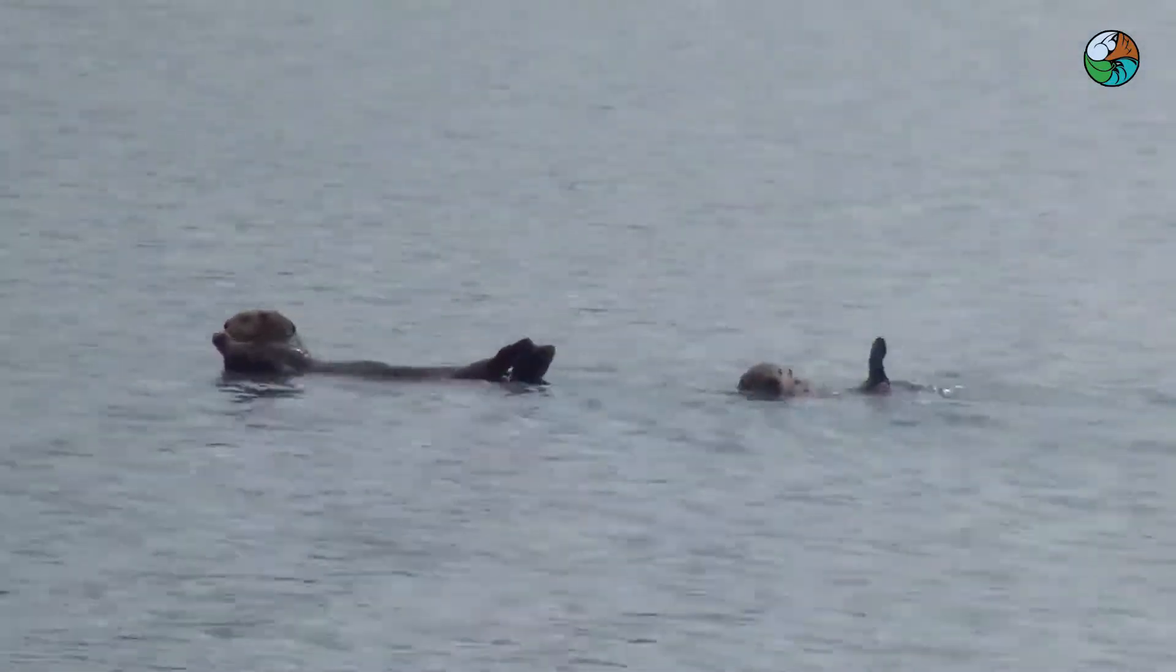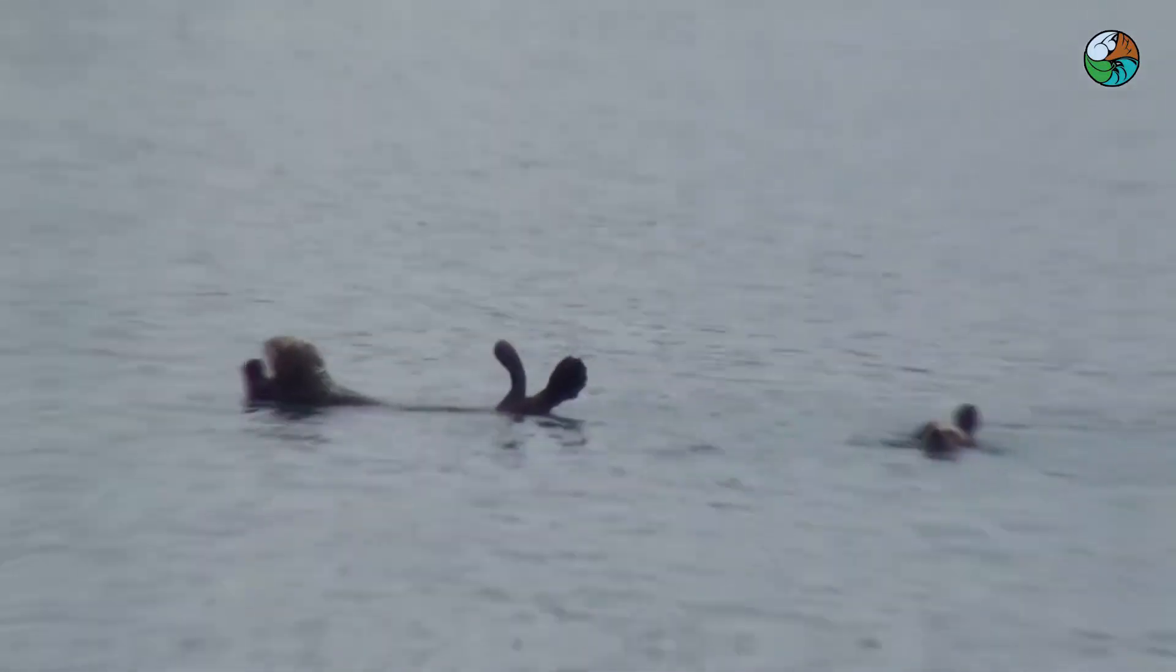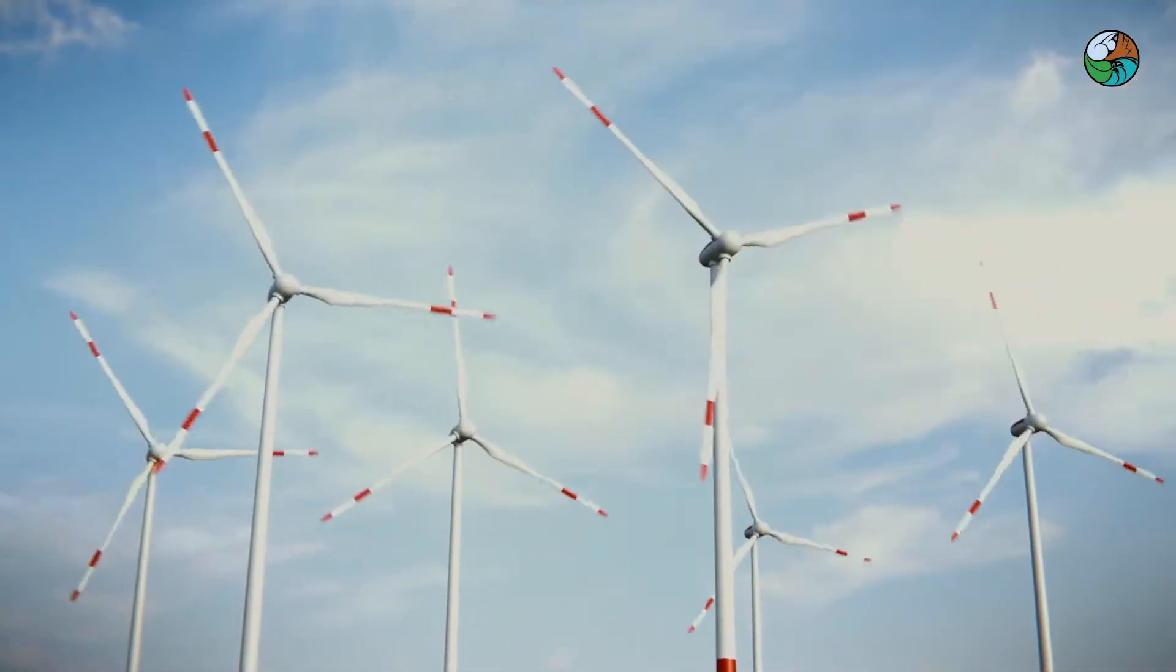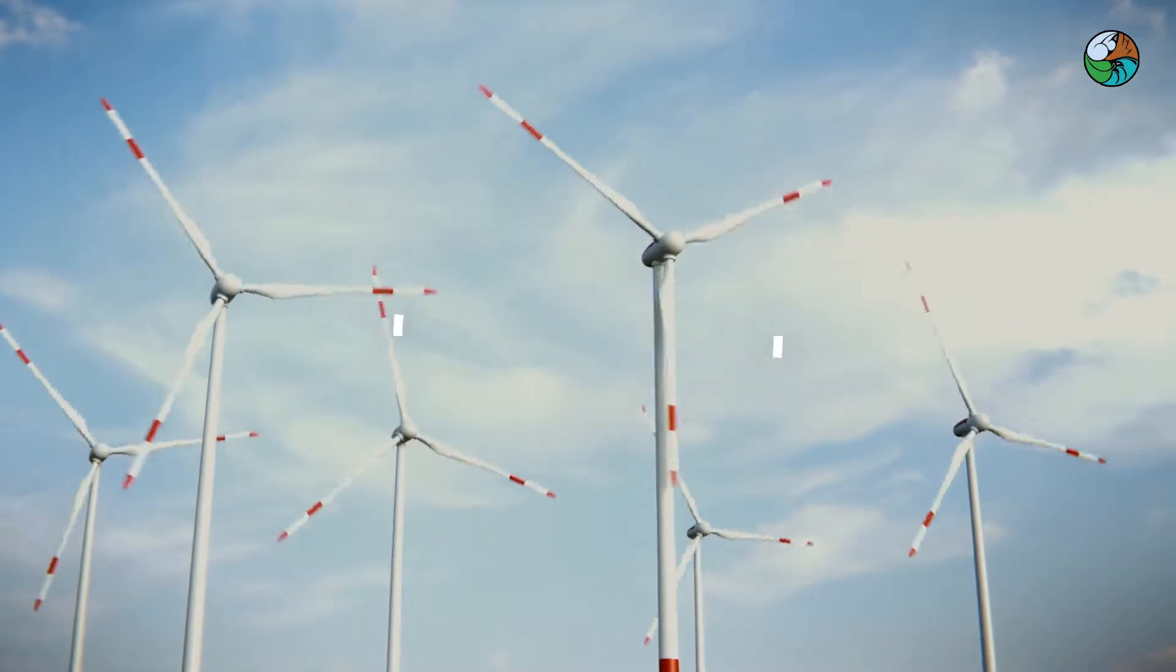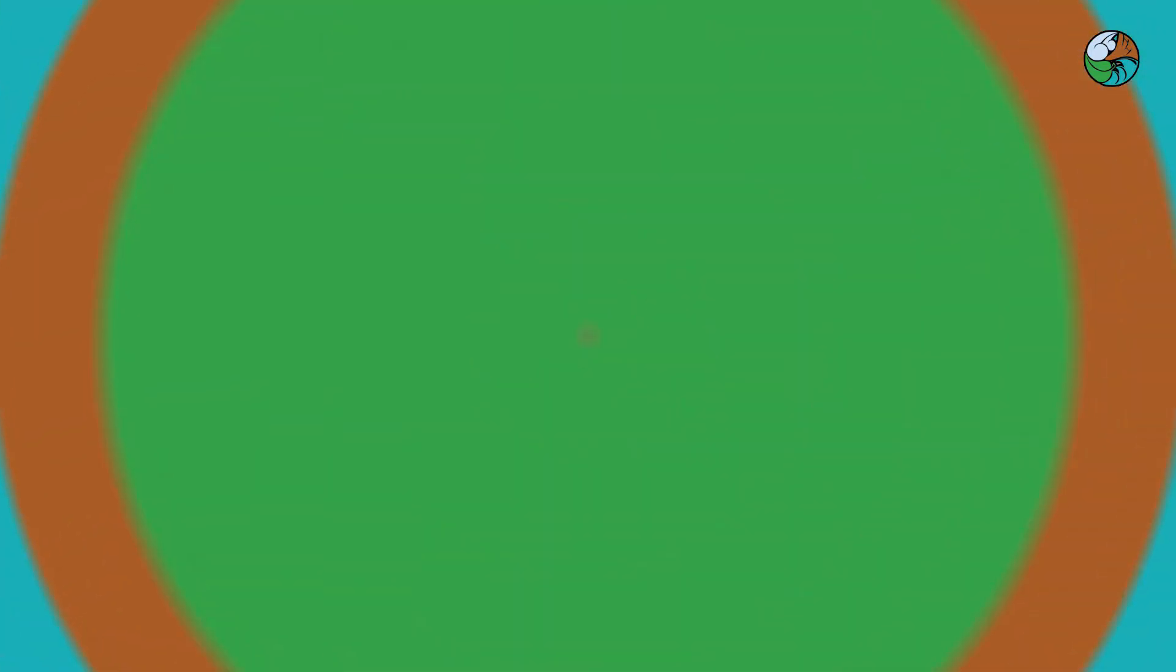In this experiment, we are going to study ocean gyres. The major ocean gyres are formed due to mainly two factors: the rotation of the earth and prevailing winds. Let's start!